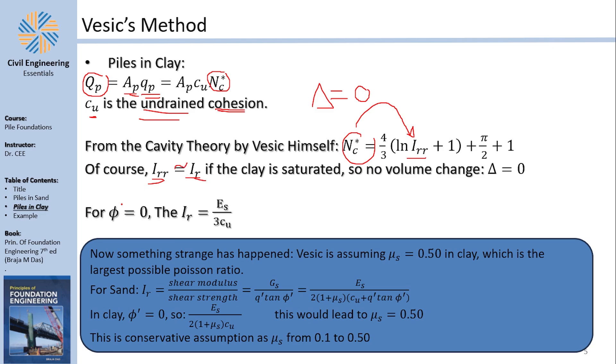Now, if you have ϕ equals zero, then Irr equals this. Irr, if you remember, is called the rigidity index. It's the inverse of the shear strain, which is basically the shear modulus divided by the shear strength, which is Gs divided by this stuff.